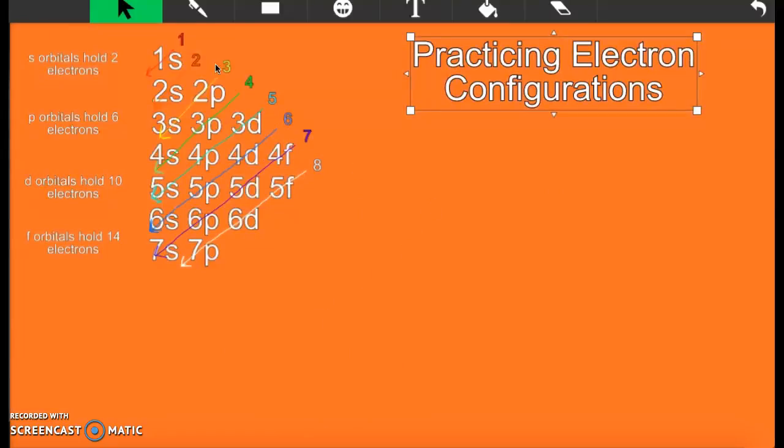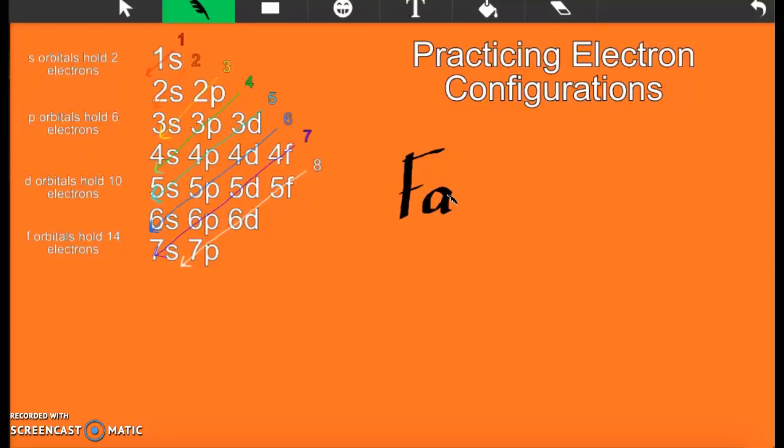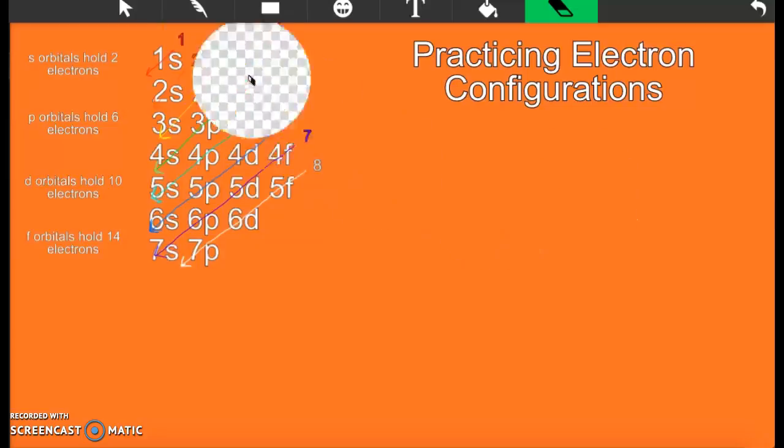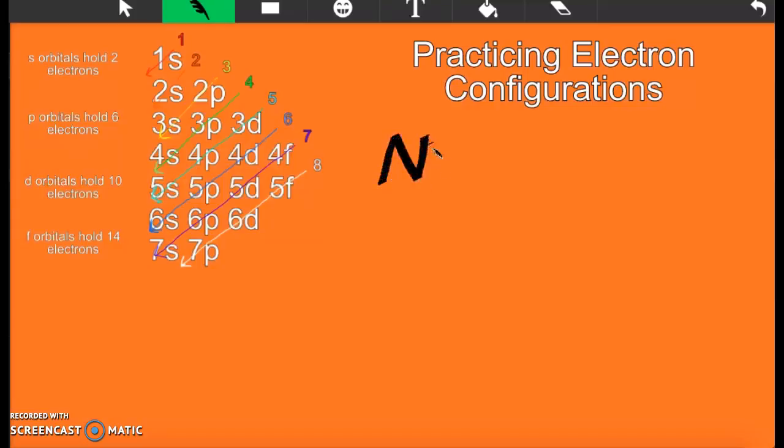Now we're going to do a little bit of practice just to see how pro we are. We did this in class. We're going to switch to the quill because we so fancy. Let's get a little bit of practice going. So we're going to start off simple. Let's use sodium. Sodium has 11 electrons.